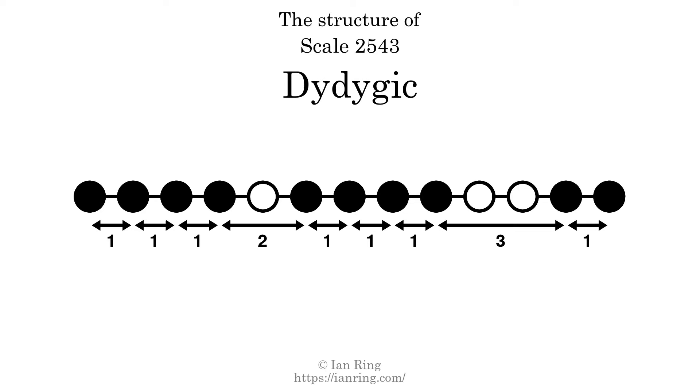The structure of a scale is a description of the interval distance between each successive tone. This scale has a structure of 1, 1, 1, 2, 1, 1, 1, 3, 1.